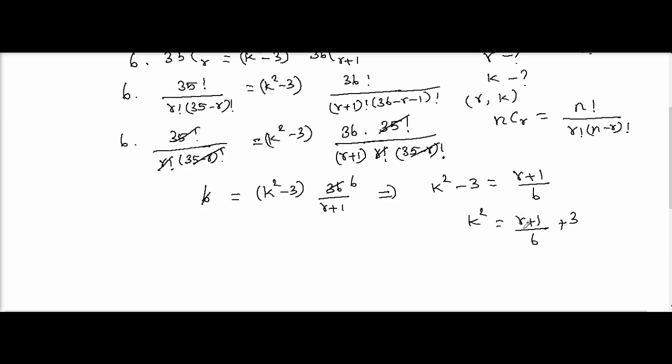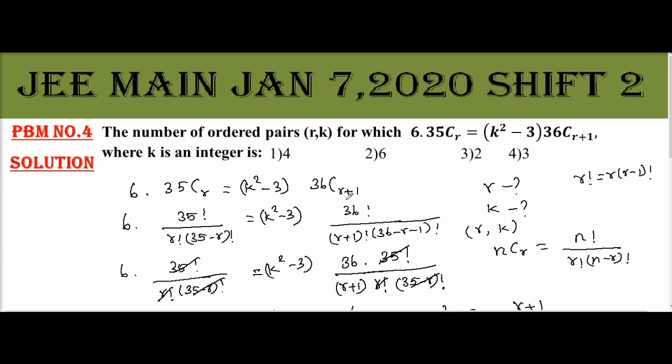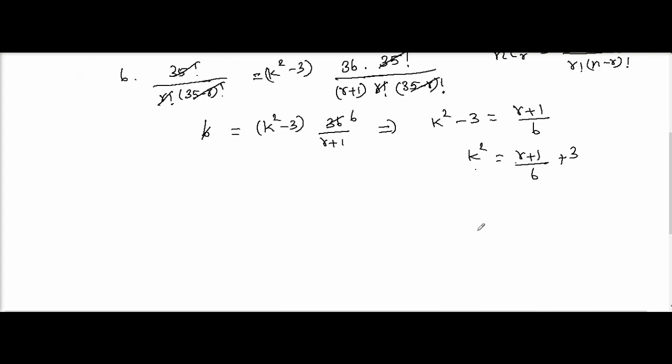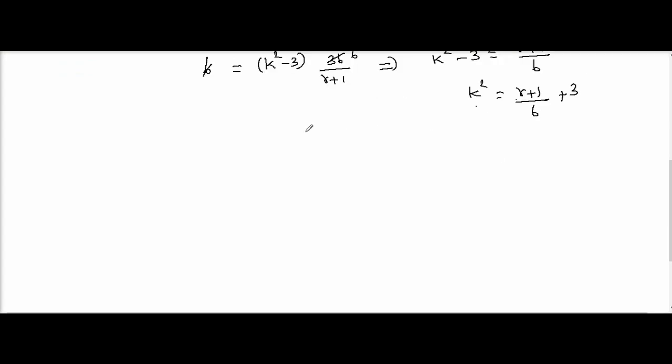Now r can take values from 0 to 35. Now if you substitute r equal to 5, that gives me k equal plus or minus 2. Next substitute r equal to 35, k square equal to 36 by 6 that is 6 plus 3 equals 9, that gives me k equal plus or minus 3.